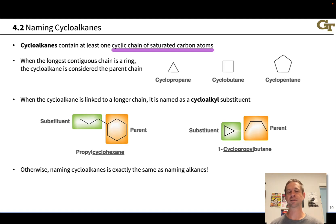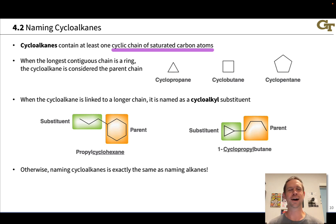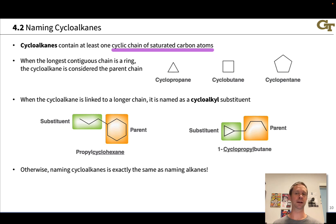In this video we're going to discuss naming cyclic and bicyclic alkanes, compounds that contain at least one chain of saturated carbon atoms. A cycloalkane is kind of like a linear alkane with the two ends tied together with the loss of two hydrogens. When the longest contiguous chain is a ring, we consider the cycloalkane the parent chain and name accordingly, putting the prefix cyclo before the name of the acyclic linear alkane with the same number of carbons.